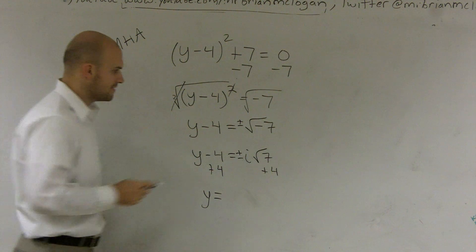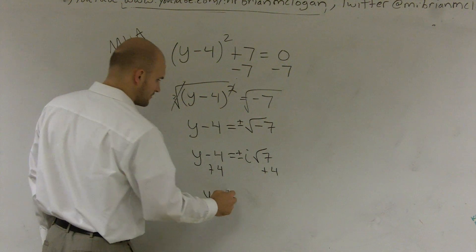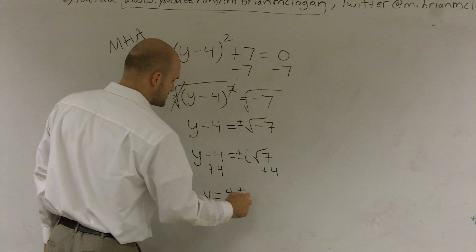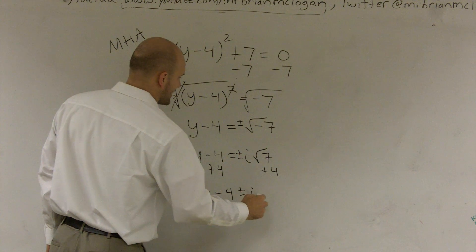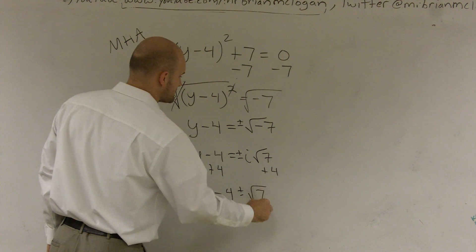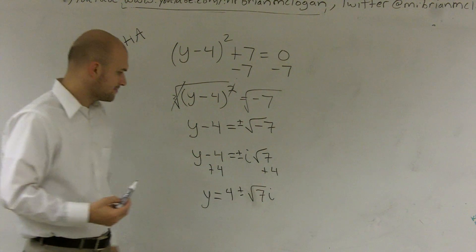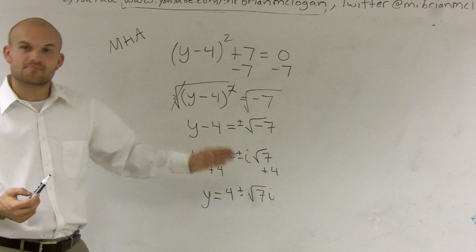And therefore, I would rewrite this as 4 plus or minus i. Actually, I'd write this as the square root of 7i, because I'm going to want to write it in complex or in standard form, which is a plus bi.